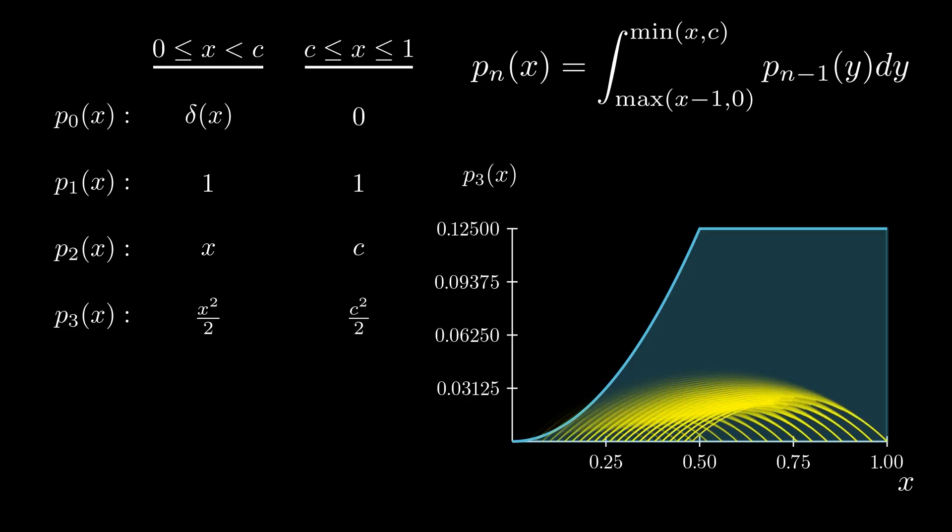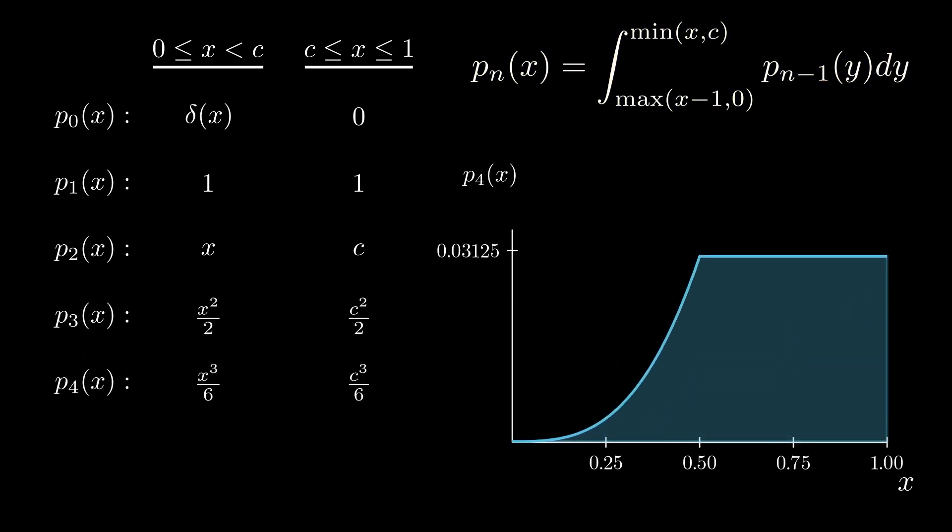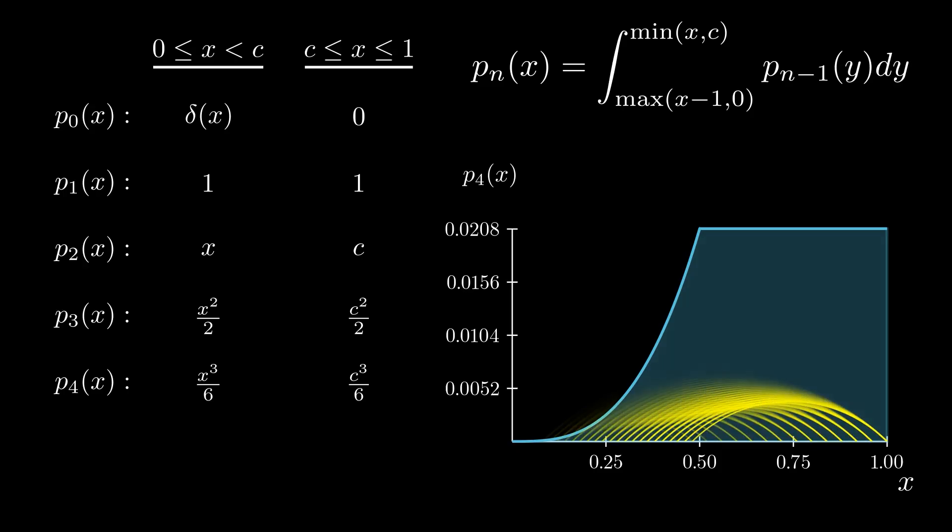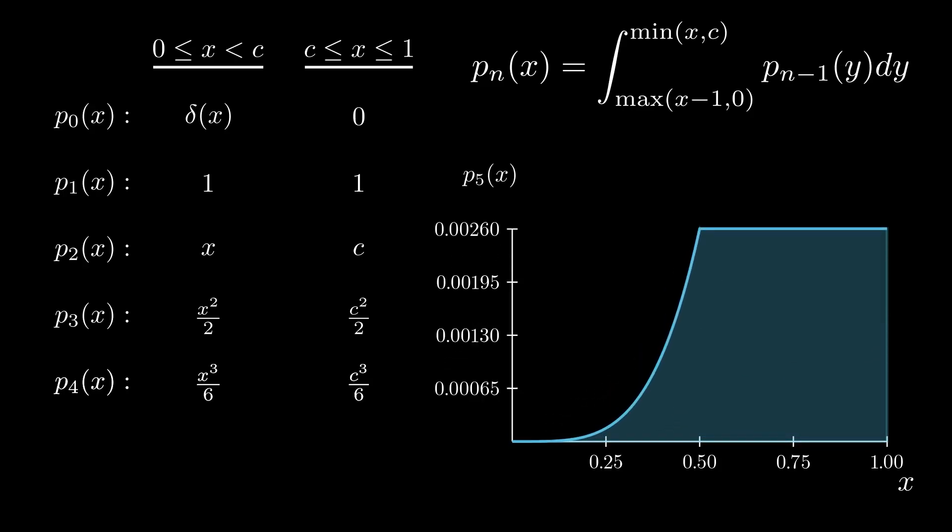We also see that the distribution is always constant above our cutoff since all possible run positions can reach the entire jump region. Ultimately, we can use this formula to determine the distribution after an arbitrary number of runs, n.